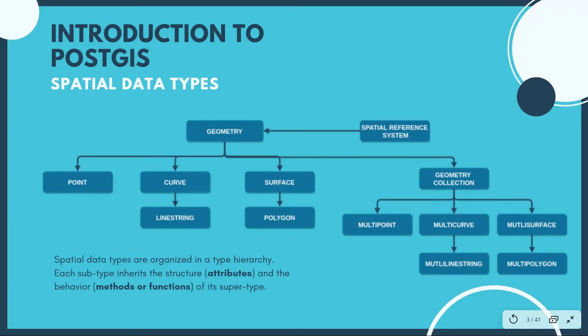This is a diagram that shows the hierarchy of geometry of these data types. As you can see it is broken down into point, curve, surface, and geometry collection. The curve is further broken down into a line string and the surface is broken down into a polygon. A point represents a location which can be a 2D, 3D, or even a 4D kind of feature. A line represents a path and it is a connection between two or more points, while a polygon represents an area whereby the starting point will be the ending point.